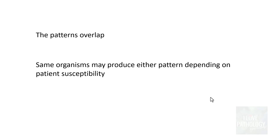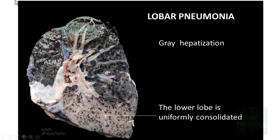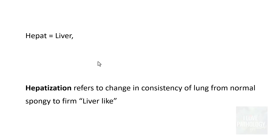In a gross specimen of lobar pneumonia, the lower lobe is uniformly consolidated compared to the upper lobe, which appears aerated. The term hepatization refers to the lung's consistency — normally spongy, but because of consolidation it becomes firm like liver, which is why it is called hepatization.